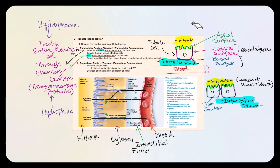Our next discussion will be all about tubular reabsorption. Let's look at a drawing of a tubule cell — in this particular case, it's a simple cuboidal cell. Remember that the entire length of the renal tubules — the proximal convoluted tubule, the nephron loop, and the distal convoluted tubule — are all simple epithelial tissue.